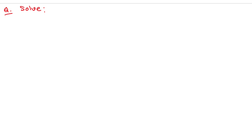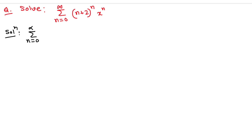Let's solve problem one: summation n equals 0 to infinity of (n+2)ⁿ times xⁿ. Solution: comparing with the standard form summation a_n xⁿ, we get a_n = (n+2)ⁿ.